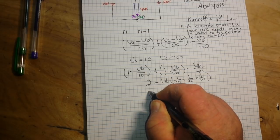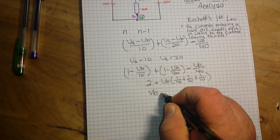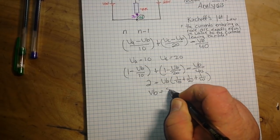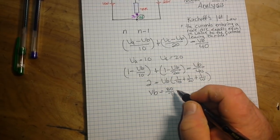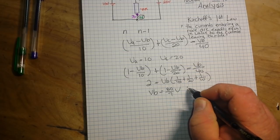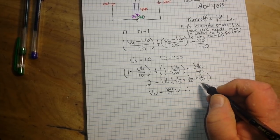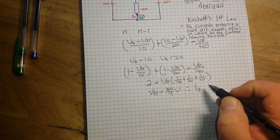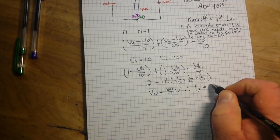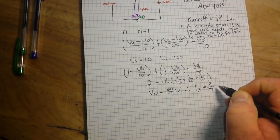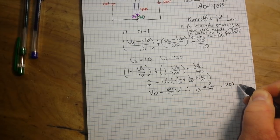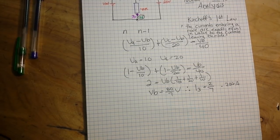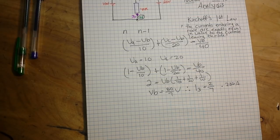All right, so now we can say that VB equals 80/7 volts. Therefore, the current I3 is equal to 2/7 or 0.286 amps, 286 milliamps. Y'all following?